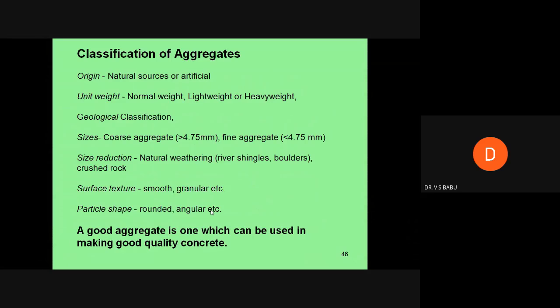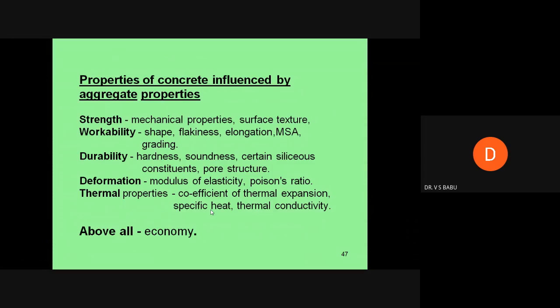We'll study surface structure, particle shape - some aggregates are rounded and some are angular. If you go to the quarry, you'll get angular aggregate; if you go to natural river beds, you'll find rounded aggregates.